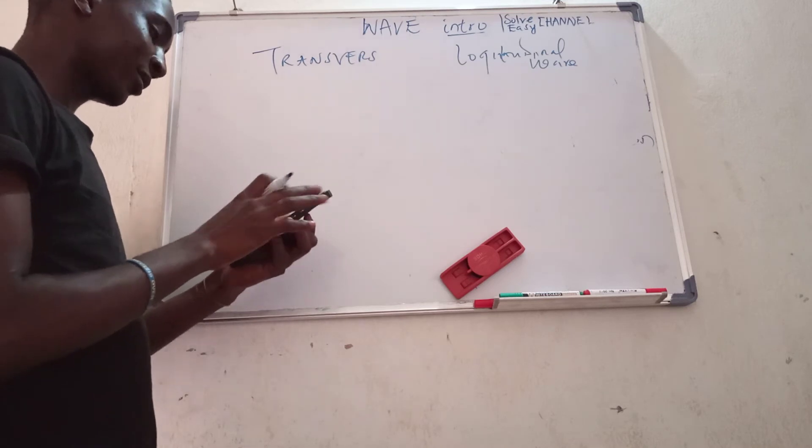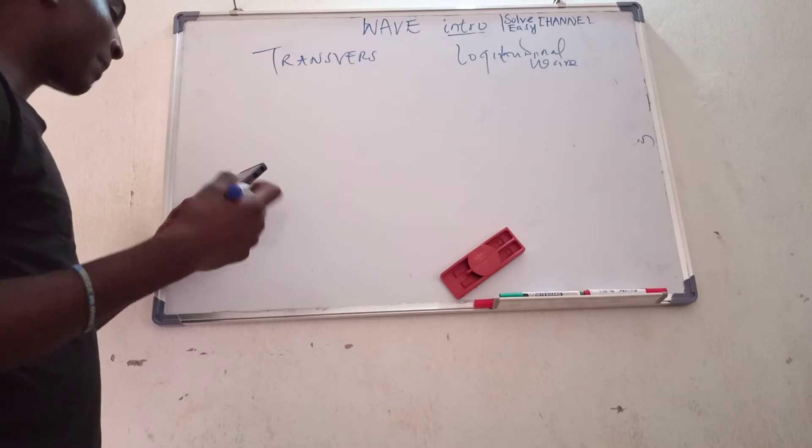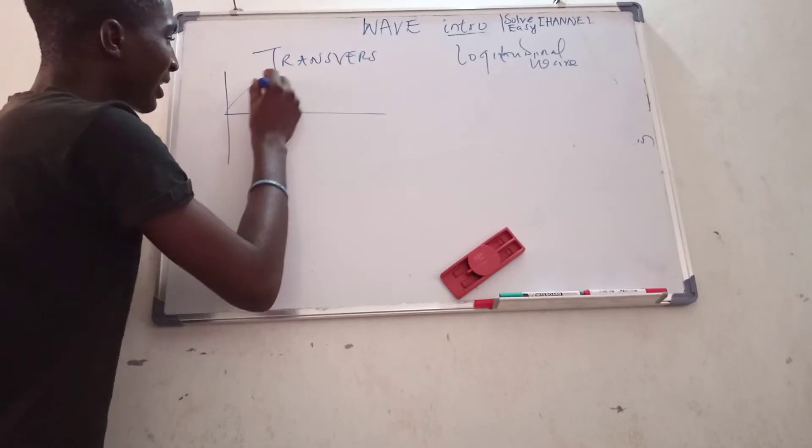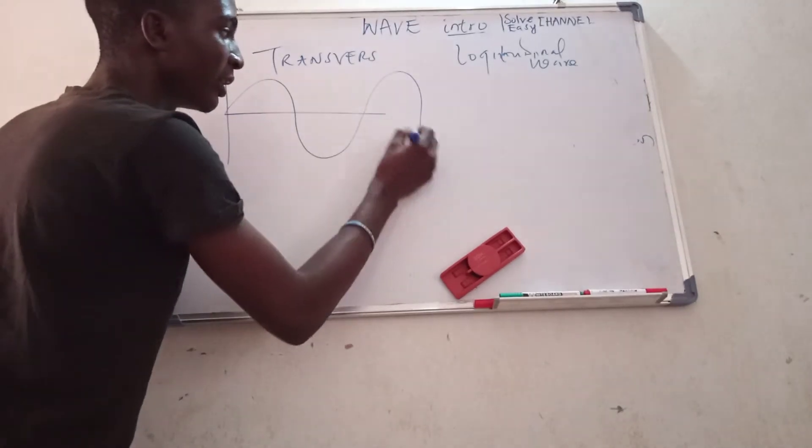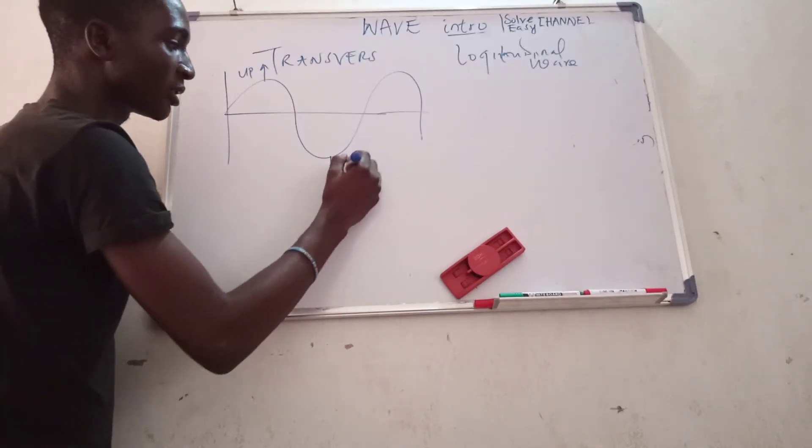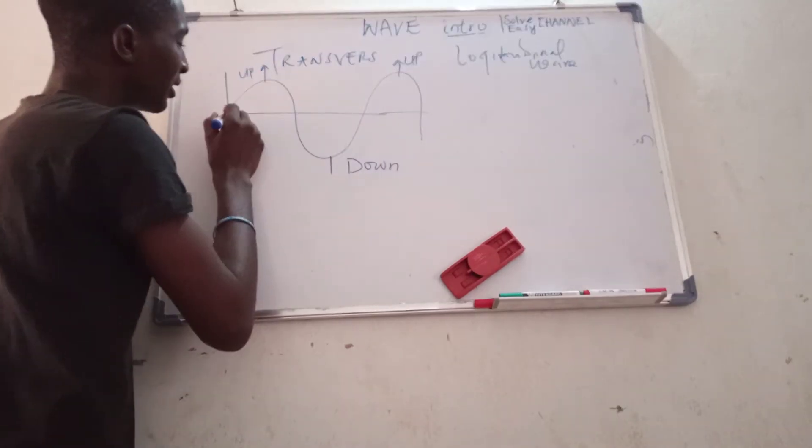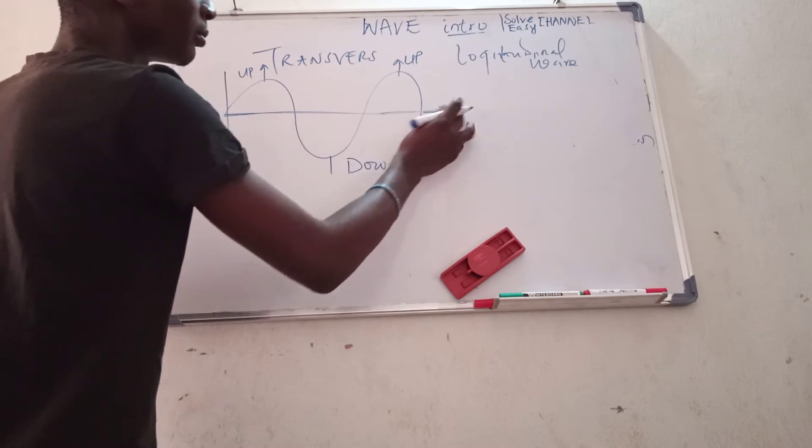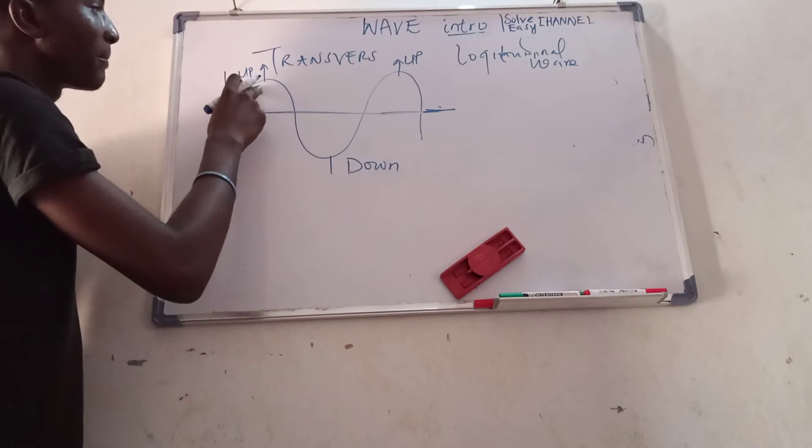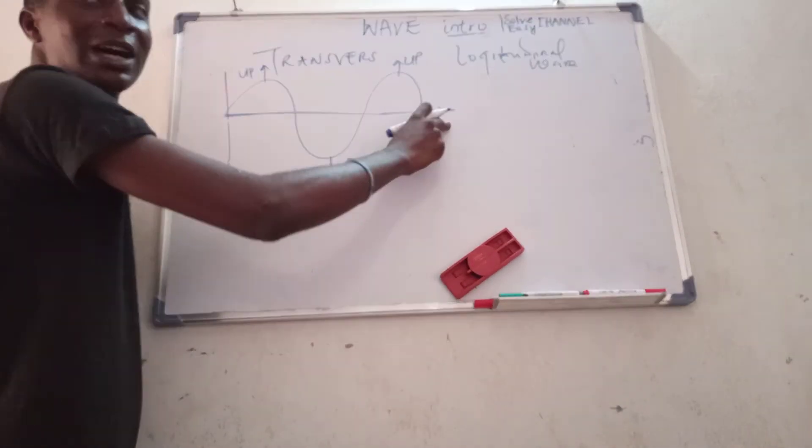What are transverse waves? Transverse waves are perpendicular to the direction of energy transfer. Like the diagram we drew earlier, this is an example of a transverse wave. This is up, this is down, this is up, and this is the direction of the wave. So it is always perpendicular to the energy transfer of the wave.